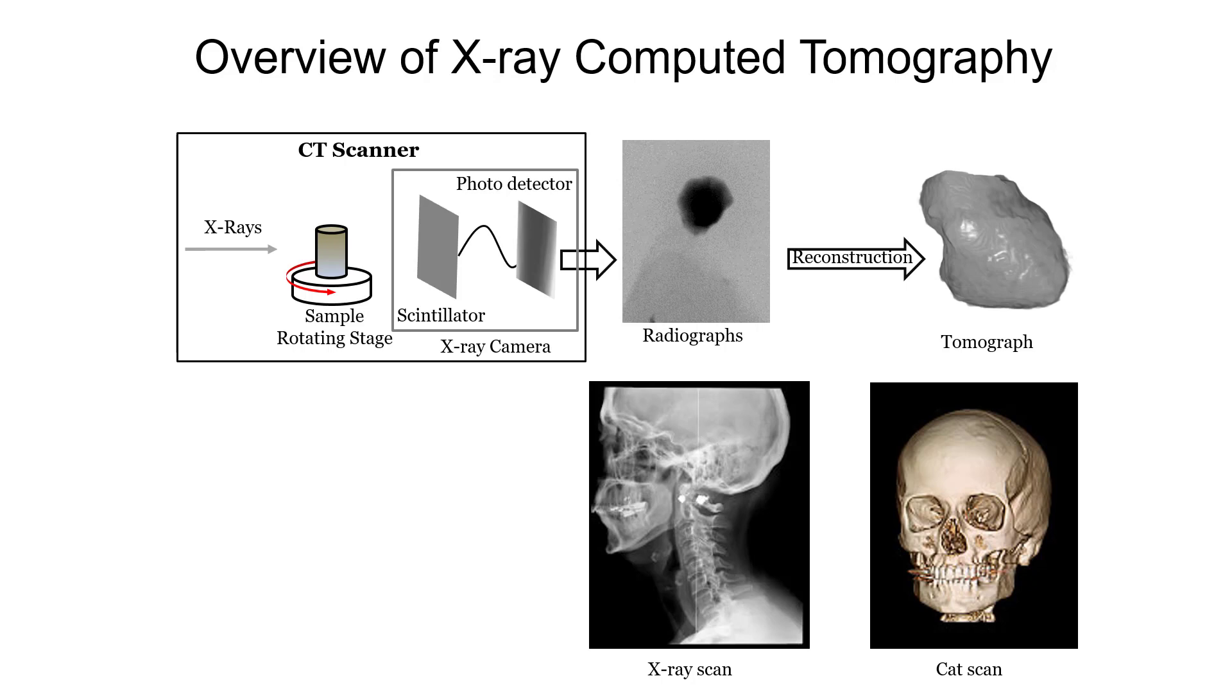Now here's an overview of the process. You take your sample and you place it on a stage that can rotate. You bombard that sample with x-rays and you take an image with a special camera of the x-rays that made it through to the other side. That image is called a radiograph and if you have had an x-ray done to your body then you have had a radiograph done to you.